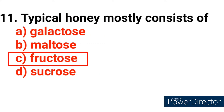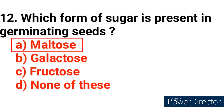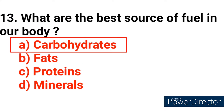Question number 11: Typical honey mostly consists of? Answer option C — fructose. Question number 12: Which form of sugar is present in germinating seeds? Answer option A — maltose.